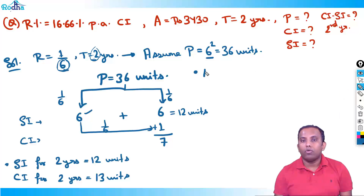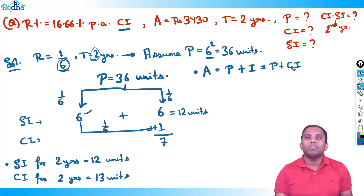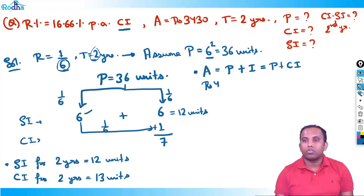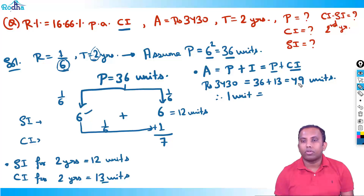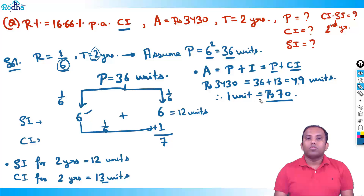Amount is always principle plus interest. Since it's compound interest, it is principle plus compound interest. Amount given is rupees 3430, which equals principle plus interest. Principle is 36 units and compound interest is 13 units, so 36 + 13 = 49 units equals rupees 3430. Therefore one unit is 3430 divided by 49. Since 49 sevens are 343 — which is 7 cubed — one unit is 70 rupees.